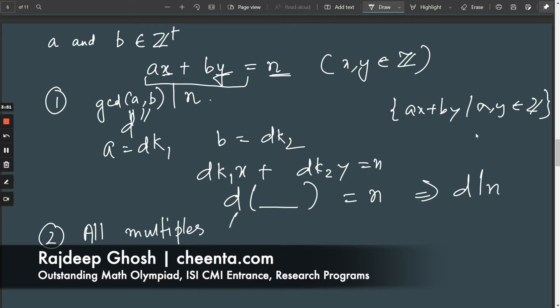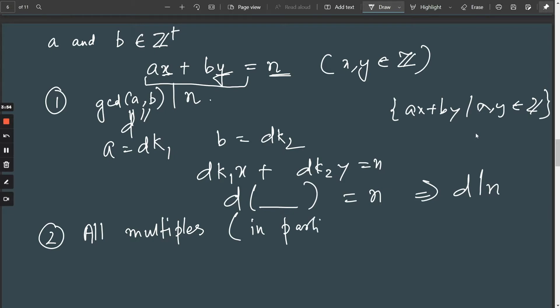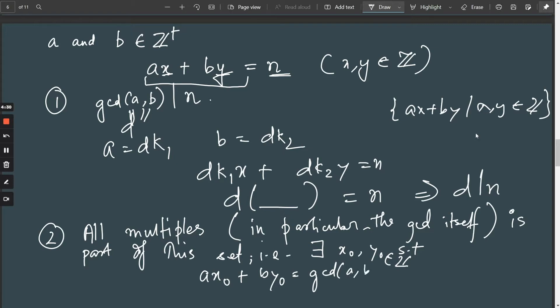And this in particular, the gcd itself is part of the set. That is, there exists x0 and y0, such that a·x0 + b·y0, and these are integers obviously, equals the gcd. This just seems like an innocent observation, but this is actually just Bezout's Lemma. Bezout's Lemma posits that for any two integers, I can write the gcd as a linear combination of them.